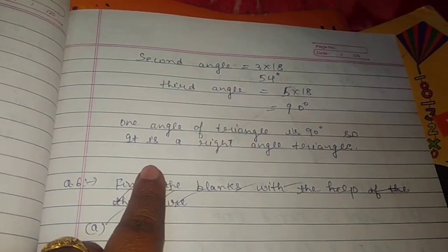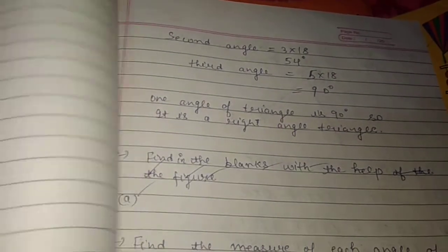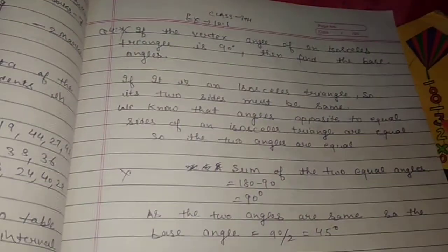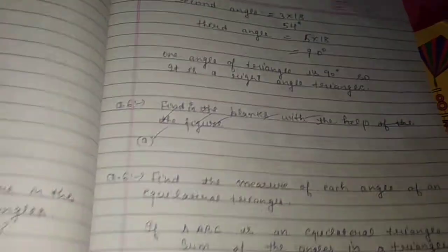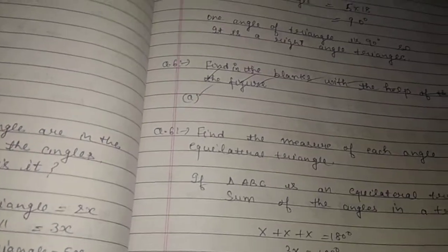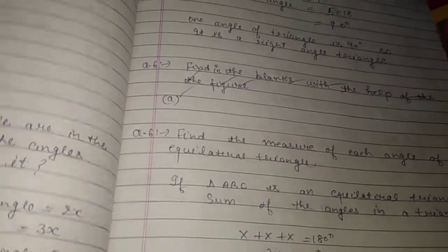One angle of a triangle is 90 degrees, so it is a right angle triangle. One angle equals 36, one equals 54, and the other equals 90. So, this is a right angle triangle.